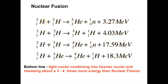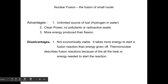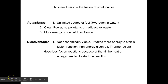The Sun achieves fusion through its tremendous gravity holding the fuel in place combined with extremely high temperatures forcing the nuclei together. The advantages of fusion: unlimited hydrogen fuel, clean power with no radioactive waste, and more energy than fission — thousands of times greater than chemical reactions. The disadvantages: not economically viable, takes more energy to start than is currently given off, and 'thermonuclear' describes why — all that heat is needed just to initiate the reaction.